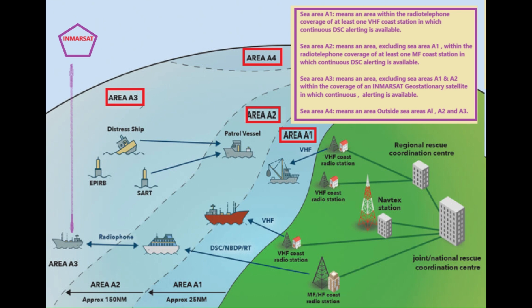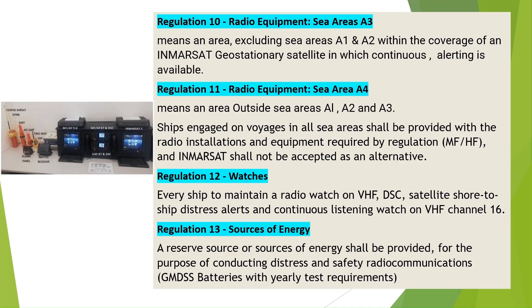Regulation 9: Radio Equipment — Sea Area A2. Means an area, excluding Sea Area A1, within the radio telephone coverage of at least one MF coast station in which continuous DSC alerting is available. Regulation 10: Radio Equipment — Sea Area A3. Means an area, excluding Sea Areas A1 and A2, within the coverage of an INMARSAT geostationary satellite in which continuous alerting is available.